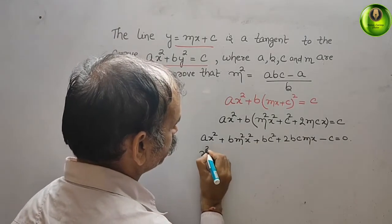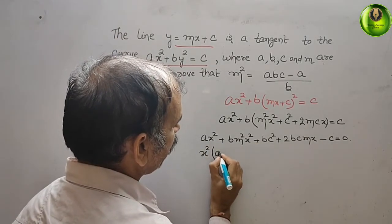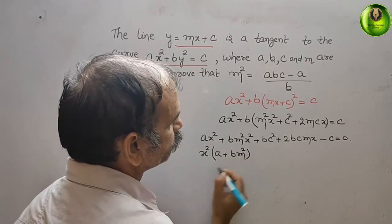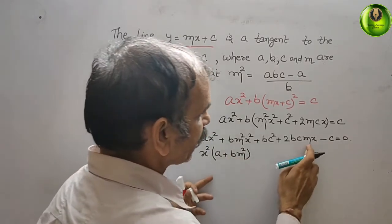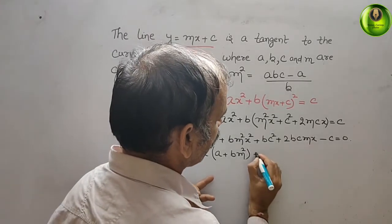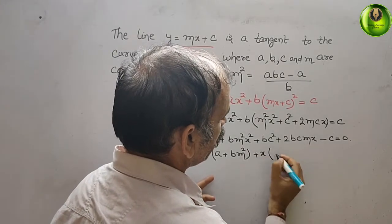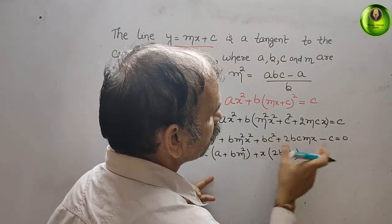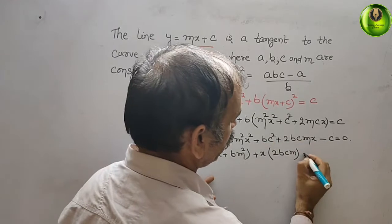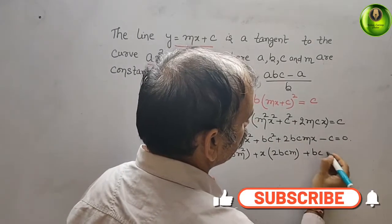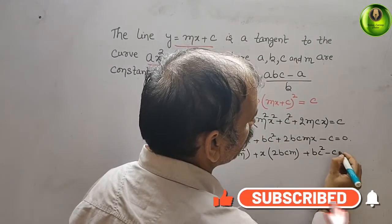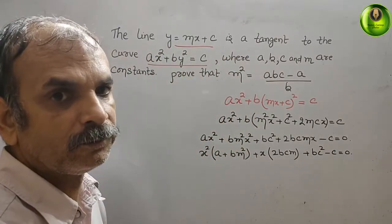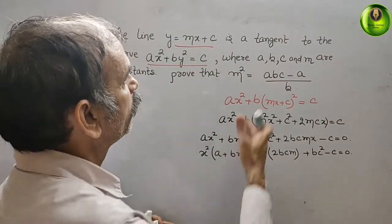Here x² is common for the first two terms, giving (a + bm²)x². The x term gives coefficient 2bcm, and the constant terms are bc² - c. So the equation is (a + bm²)x² + 2bcmx + (bc² - c) = 0.